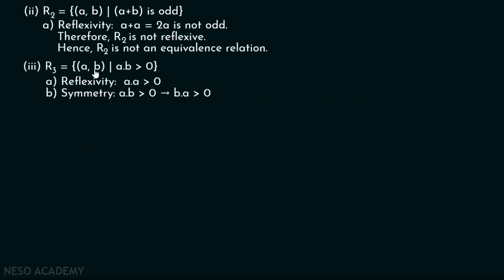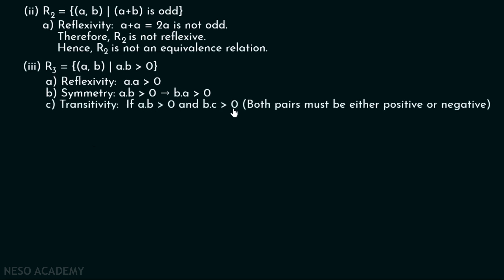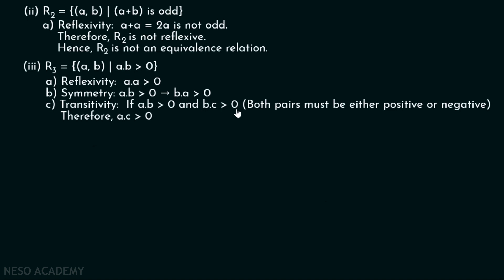For transitivity of R3: if a times b is greater than zero and b times c is greater than zero, then a times c must be greater than zero. For both products to be positive, pairs must share the same sign. If a is positive, b must be positive, and then c must be positive, so a times c is positive. If a is negative, b must be negative, and c must also be negative, so a times c is again positive. Therefore, R3 is transitive and is an equivalence relation.